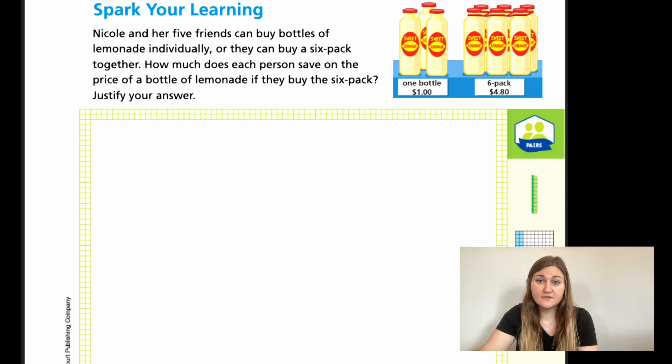If each friend, six individuals, bought one bottle each, that price here is showing it's $1 for each person. So if each person spent a dollar on each bottle of lemonade, that means that for a total, they would be spending $6. Now we know that the six pack price is $4.80. We know the six pack is a better deal because we're spending $4.80 as a group instead of $6. But the problem is asking how much does each person save on a bottle? So we need to figure out how much they save as a group, and then we can figure out how much they saved as individuals.